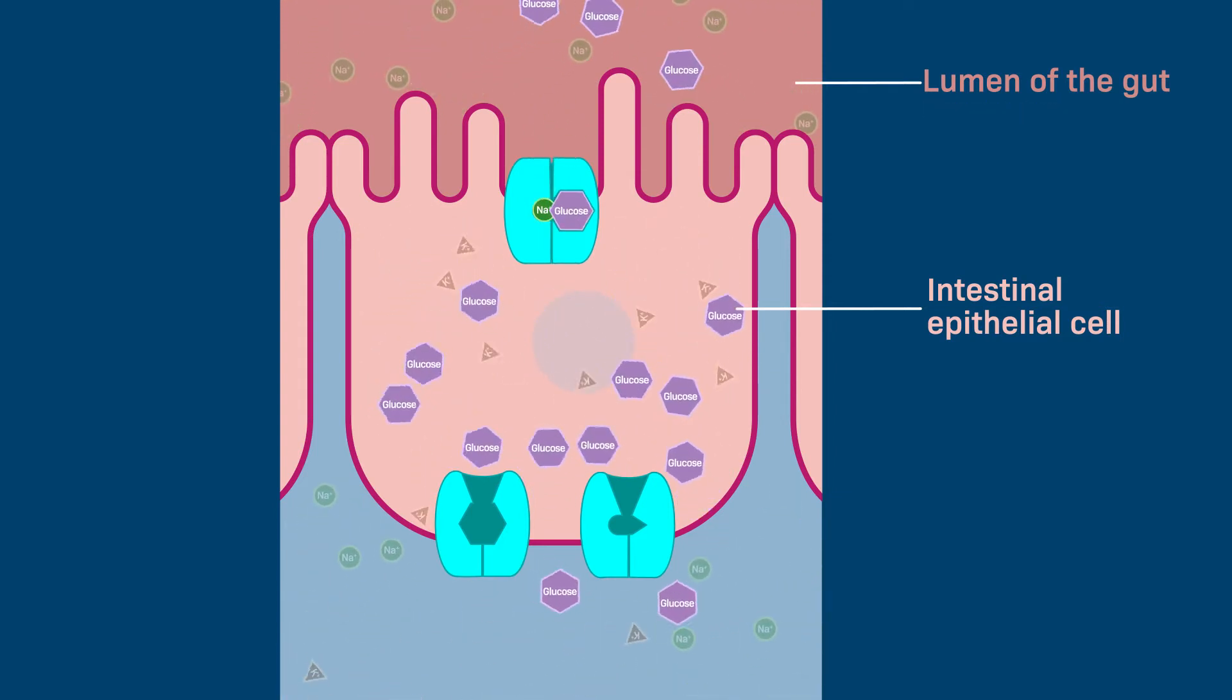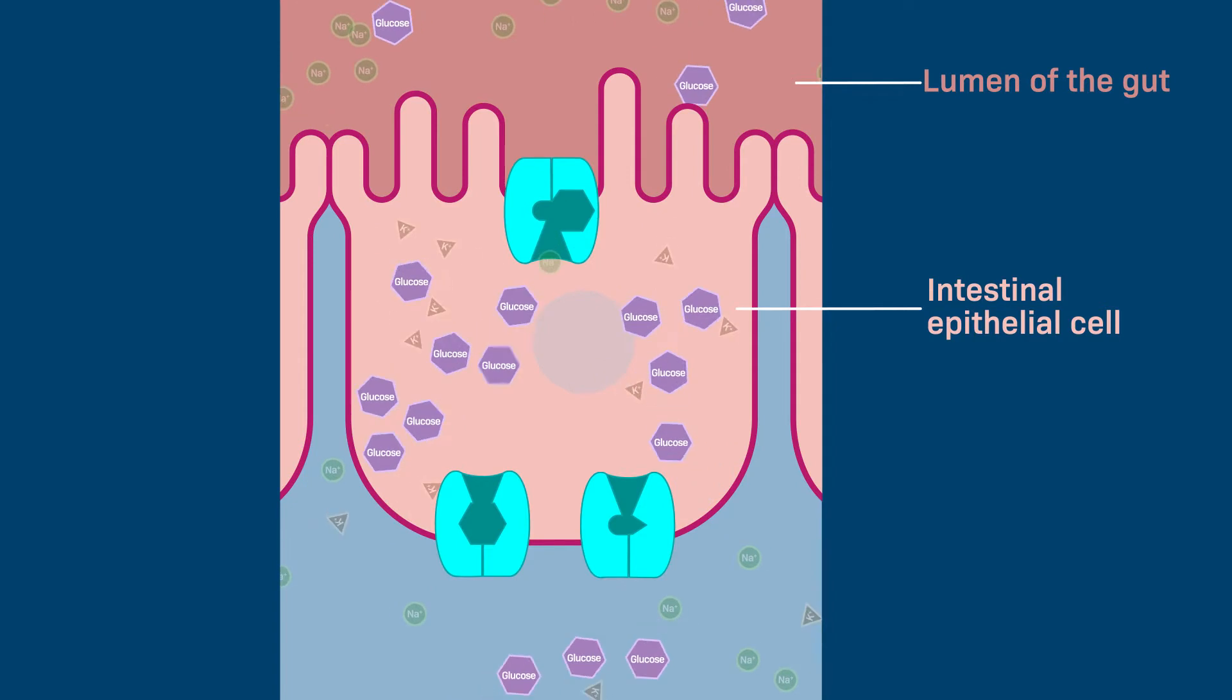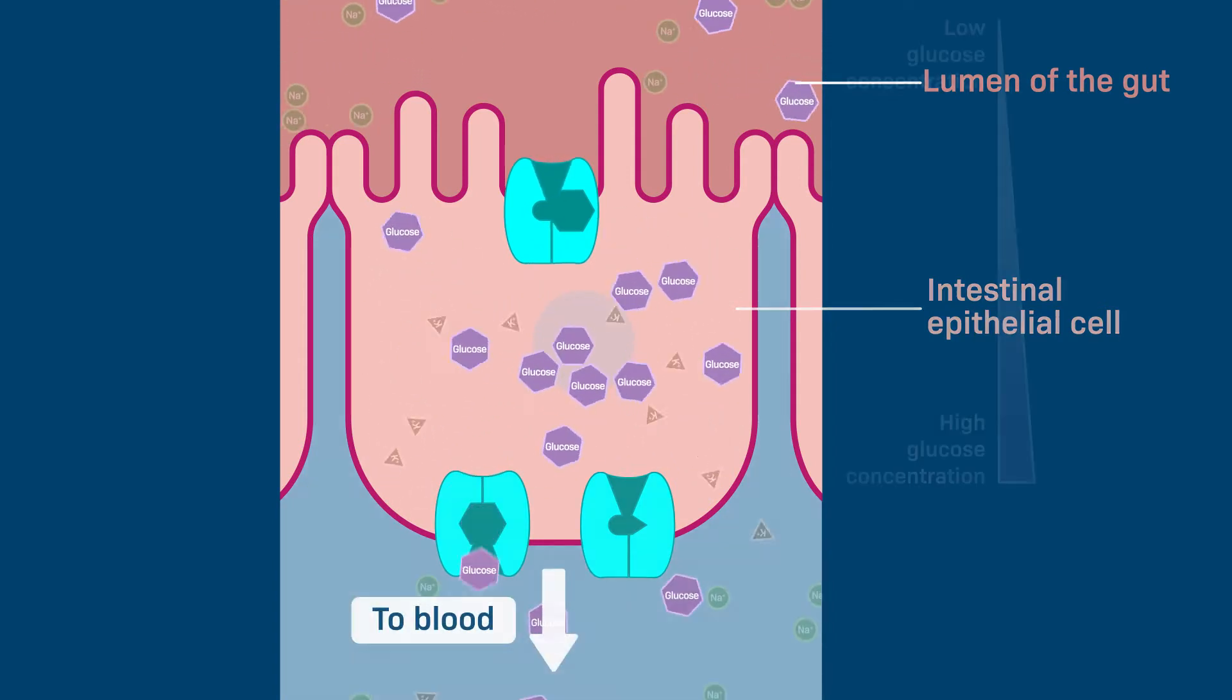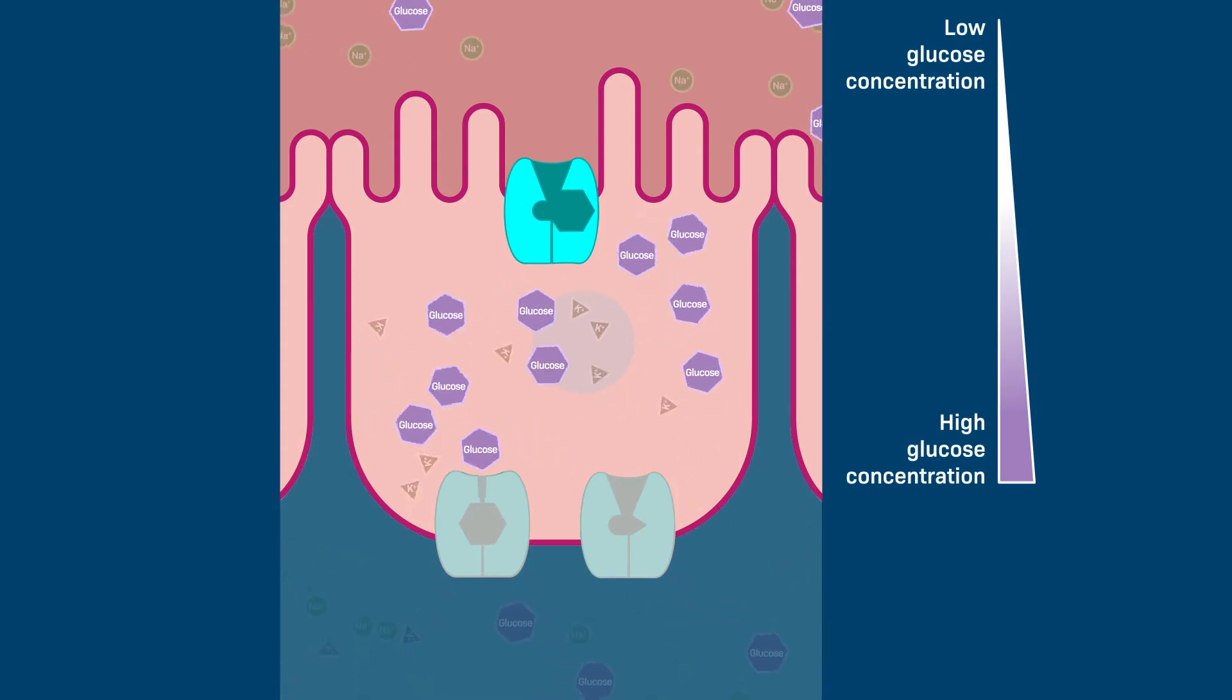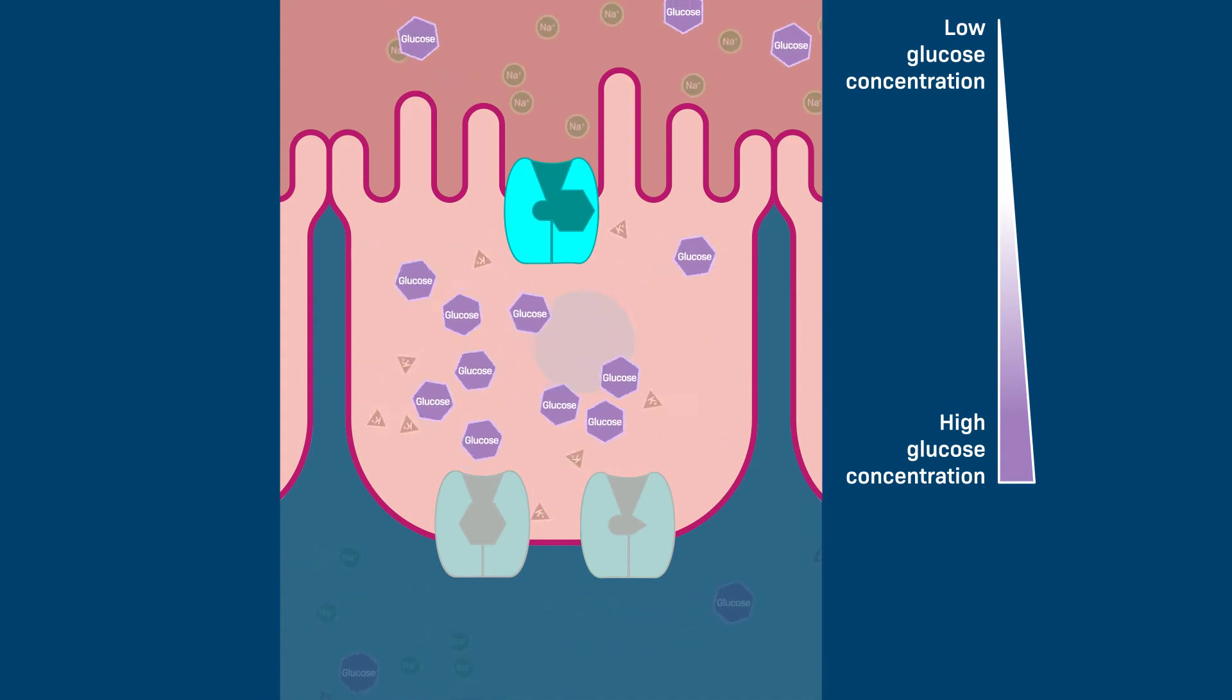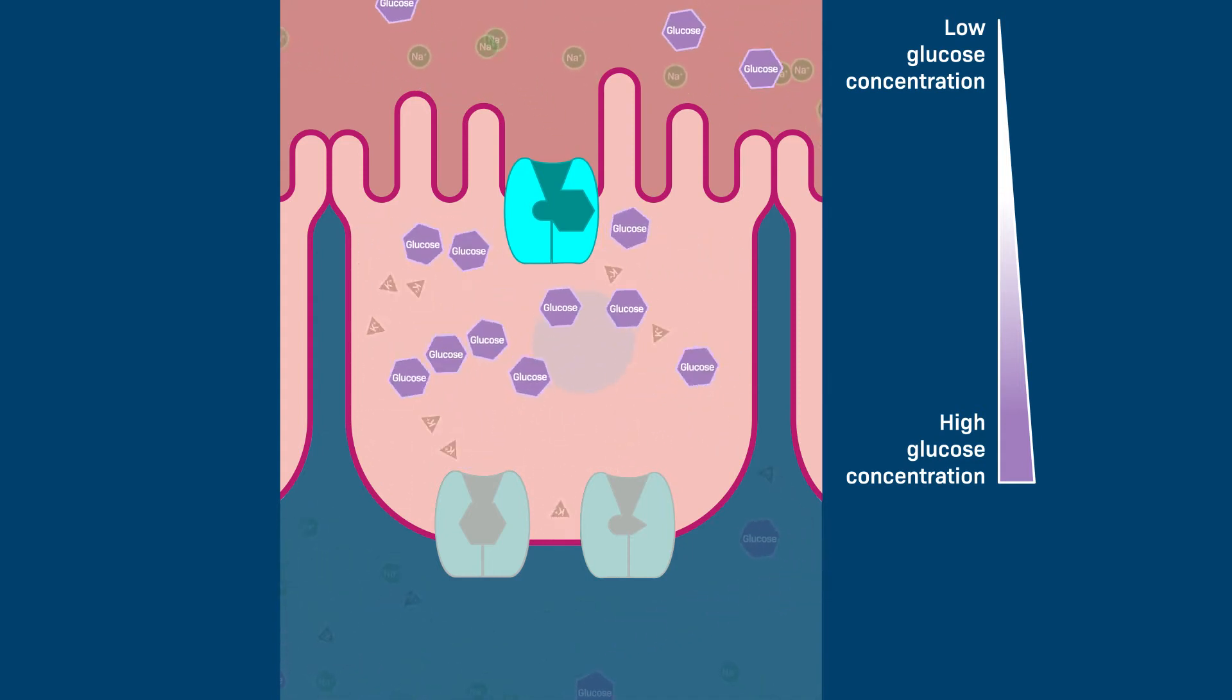Nutrients like glucose must first enter the intestinal cells that line the inside of the gut before they can pass into blood vessels. However, glucose is typically higher in concentration inside the cells than in the lumen of the gut, so transporting glucose into the cell requires energy.